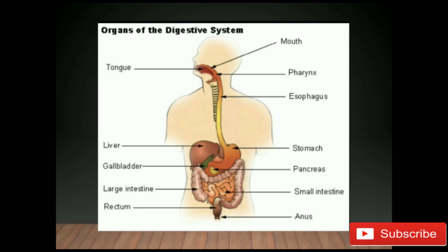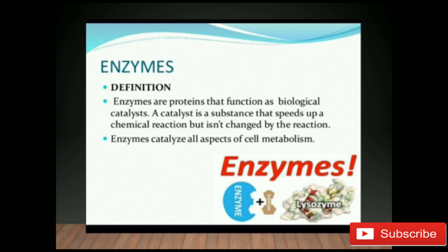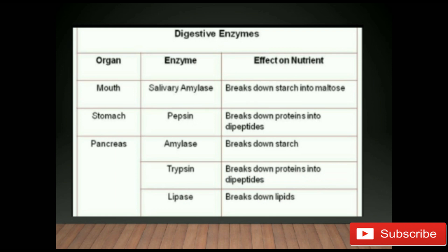Enzymes are present in the mouth, stomach, pancreas, and liver. Enzymes are proteins that function as biological catalysts. A catalyst is a substance that speeds up a chemical reaction but is not changed by the reaction. Examples of enzymes: amylase is present in the mouth and breaks down starch; pepsin is present in the stomach and breaks down protein. The pancreas has three enzymes — amylase, trypsin, and lipase — which break down starch, protein, and lipids respectively.